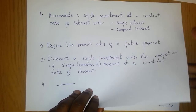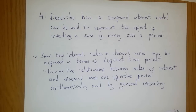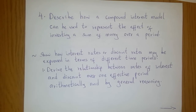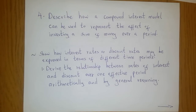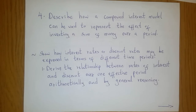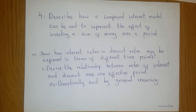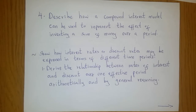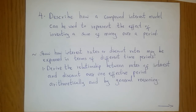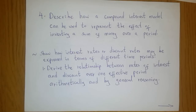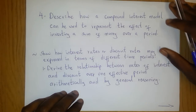Finally, we will describe how a compound interest model can be used to represent the effect of investing a sum of money over a period. The second objective will be to show how interest rates or discount rates may be expressed in terms of different time periods. Under that objective, we will derive the relationship between rates of interest and discount over one effective period, both arithmetically and by general reasoning.